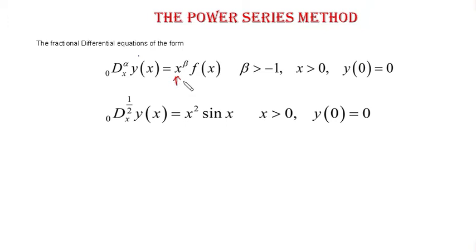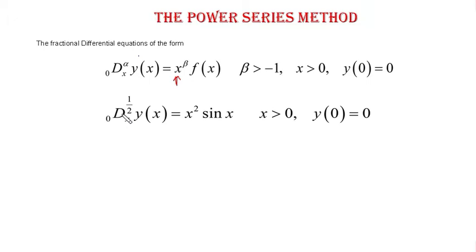How can we tackle such functions with the power series method? As you have seen in the previous lecture, when we apply the power series method we need to compare the powers of x, and we can compare only if we have the same power. Taking an extra factor on the right-hand side might cause some issues — how are we going to address that? I'll take an example: the capital fractional derivative from 0 to x of order 1/2 of y(x) equals x squared times sine of x, with the initial condition at 0.